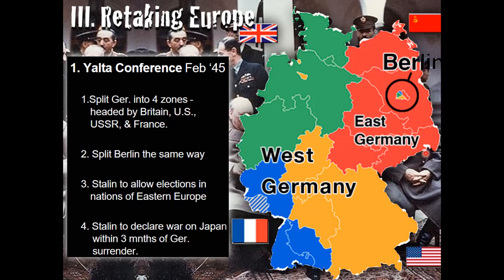Those countries actually became satellites of the Soviet Union. Remember, the Soviet Union is not a democratic nation but rather a communist country. Stalin also promised to enter the war against Japan once Germany was defeated. Critics argue that Roosevelt and Churchill didn't do enough to prevent Soviet domination of half of Europe. Eastern Europe is going to be a huge issue between the Soviet Union and the Western countries after the war.